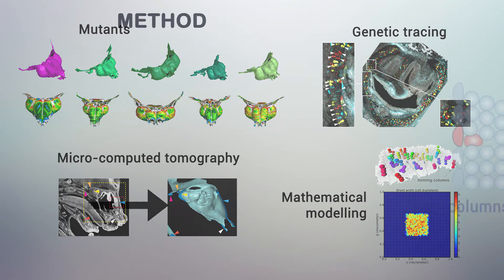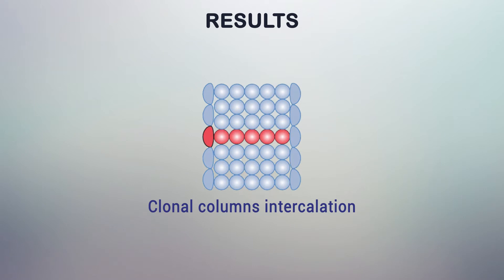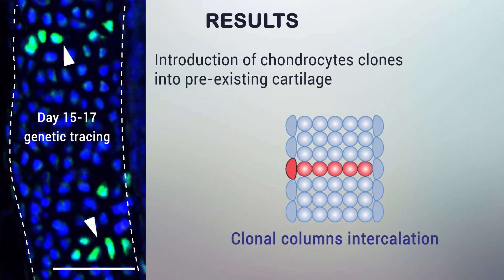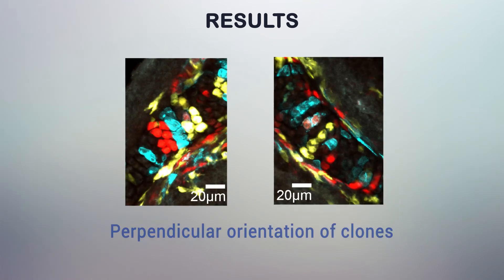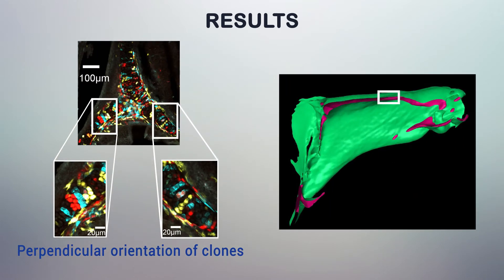In this paper, we report a novel principle of vertebrate cartilage growth that is based on introducing oriented clonal units of chondrocytes into pre-existing cartilage. The orientation and geometry of chondrocyte clones defines the overall macro shape of the entire structure.